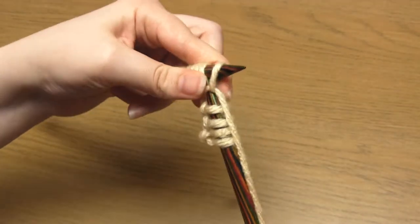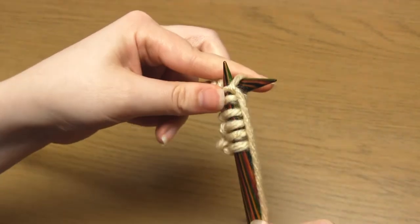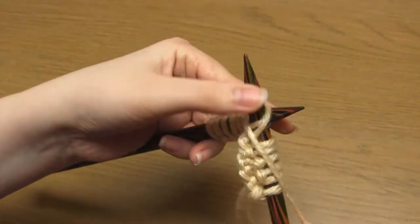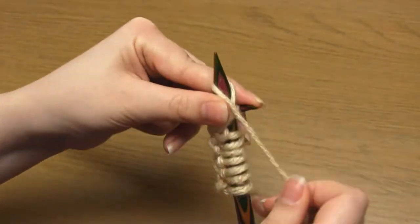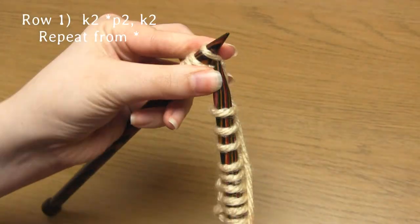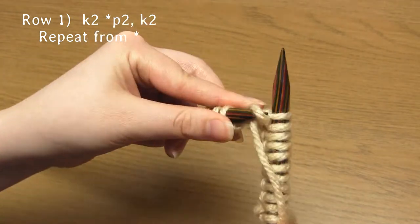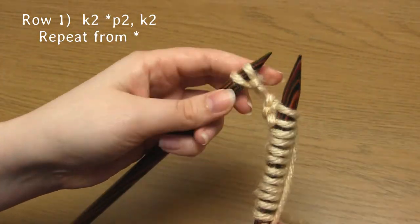You then just need to repeat purl two, knit two, over and over until the end of the row. So that's purl two, knit two and so on. Always remember that the working yarn needs to be at the back for a knit stitch and at the front towards you for a purl stitch.